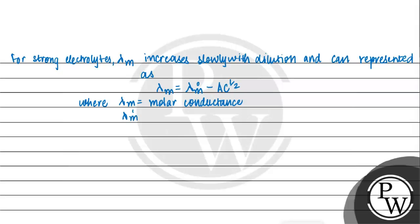Lambda m0 is limiting molar conductance. When dilution is at infinite dilution and concentration almost approaches zero, we get the limiting molar conductance. A is a constant, C is concentration.